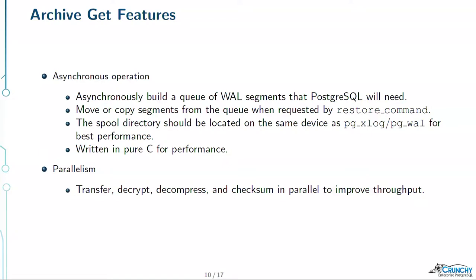Archive get also works asynchronously and in parallel, just like archive push, but its mode of operation is different. Postgres is going to tell us it needs a specific WAL segment. We can bet that if it asks for WAL segment one, pretty soon it's going to be asking for WAL segment two. If we don't have that in hand, we're going to have to tell Postgres to wait. So instead, we build a queue of WAL segments that Postgres is going to need. You can set the size of this queue. We build up that queue in the background while Postgres requests in the foreground, and we can just hand it the WAL segment immediately.